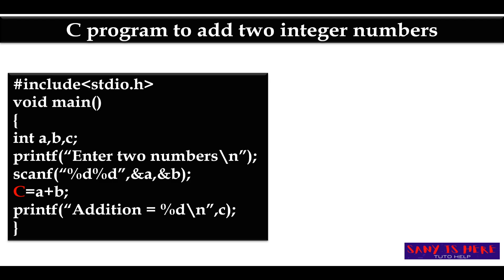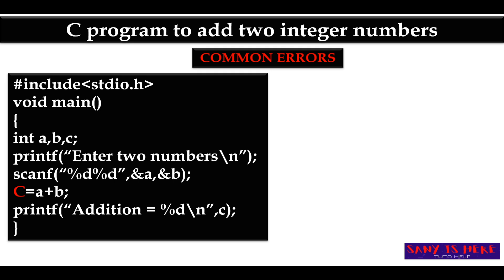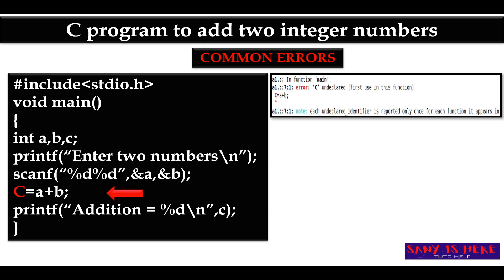The next type of mistake is also very common. You declared your variables in lowercase as a, b, c, but while using them you wrote capital C. This is the error — it shows 'C is undeclared' because you declared small c, not capital C. In C programming, lowercase c and uppercase C are different identifiers.